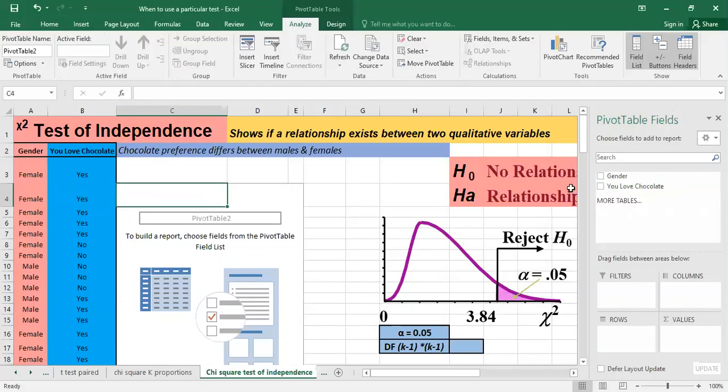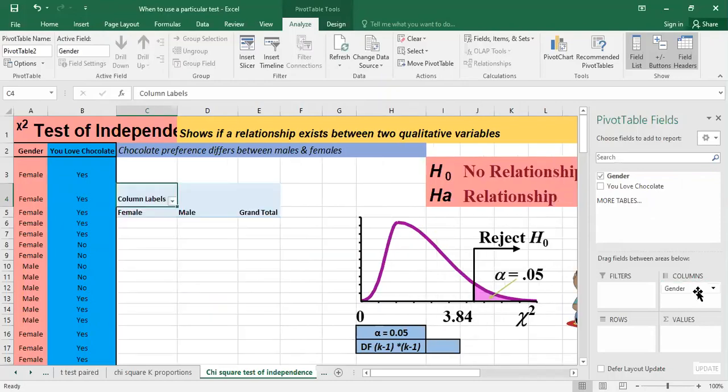So as you can see here to the right, I'm having the gender and I'm having you love chocolate, so the chocolate preference. So I put in columns the gender, I drag it here.